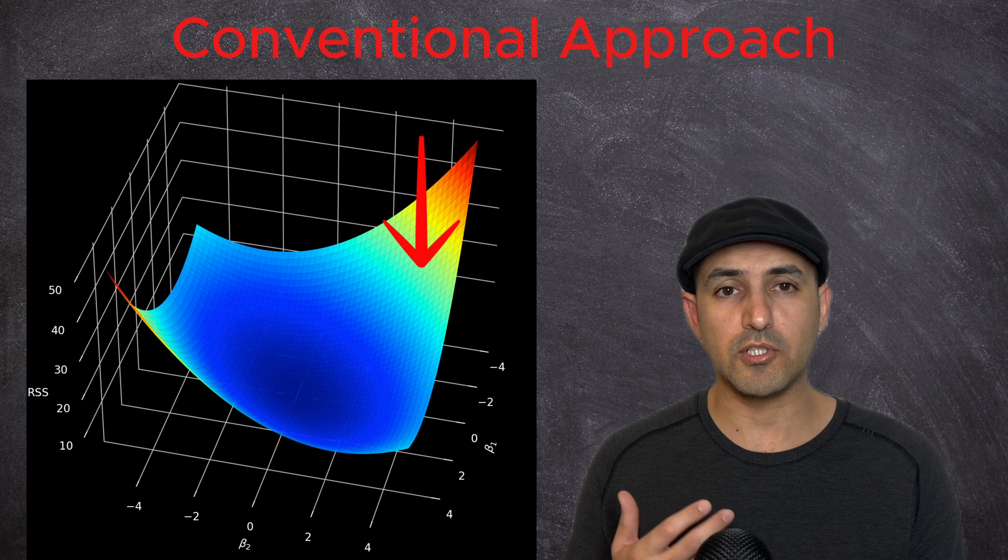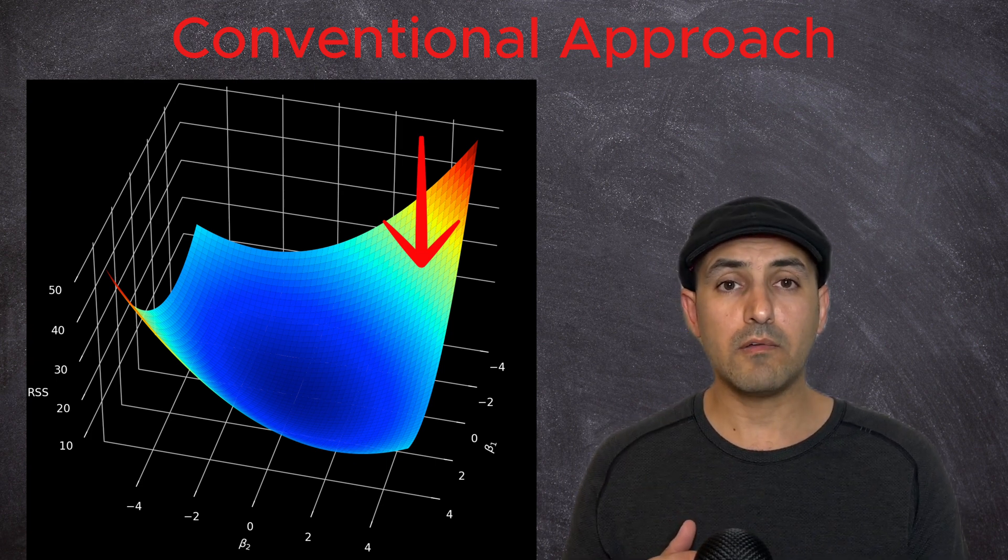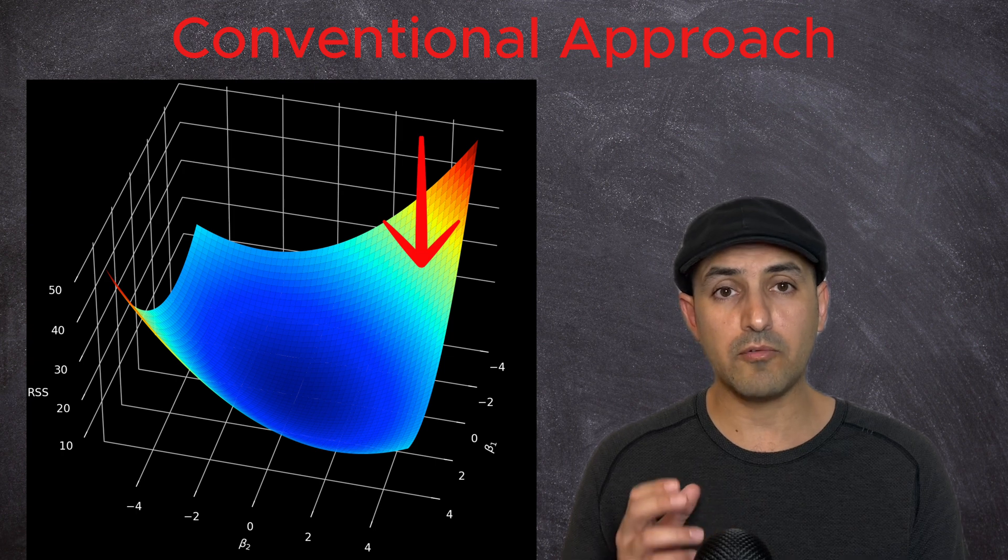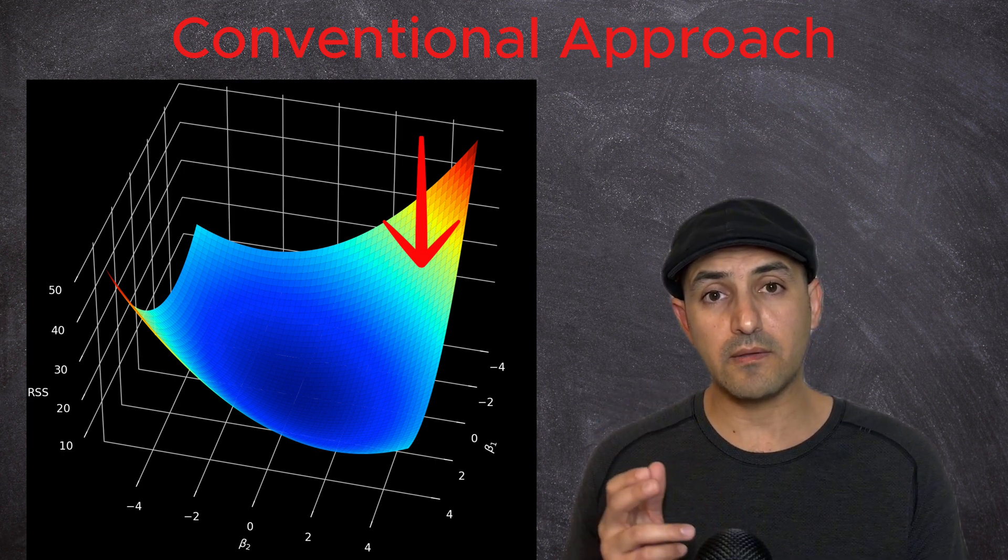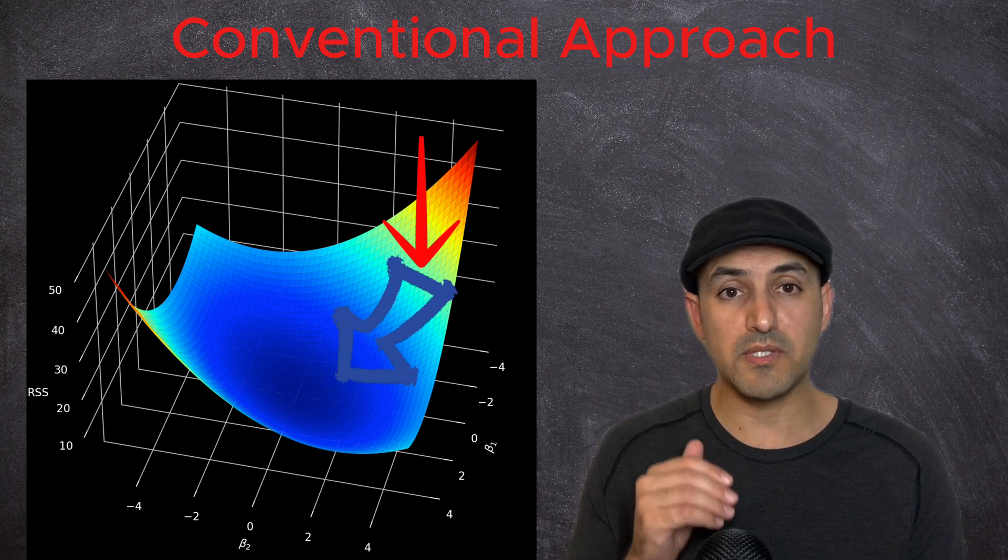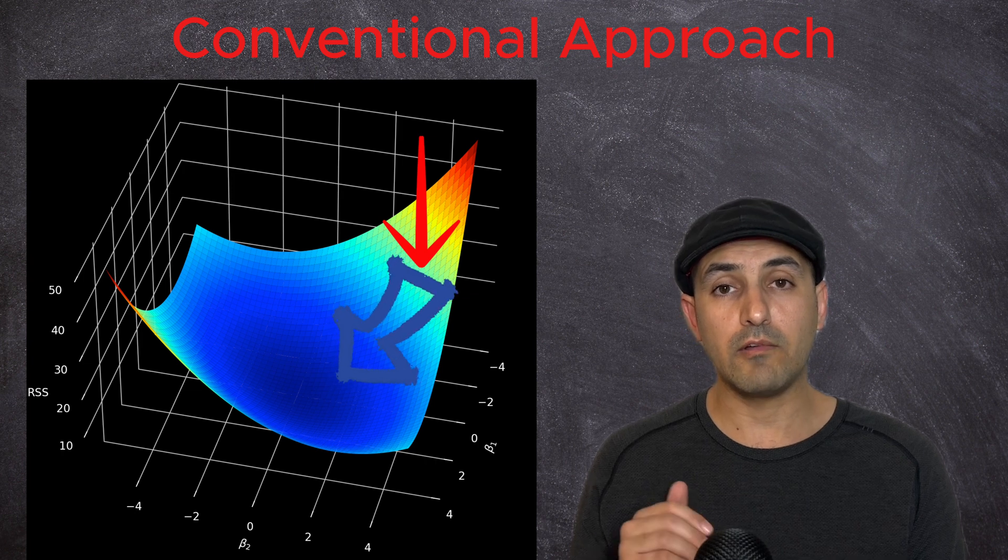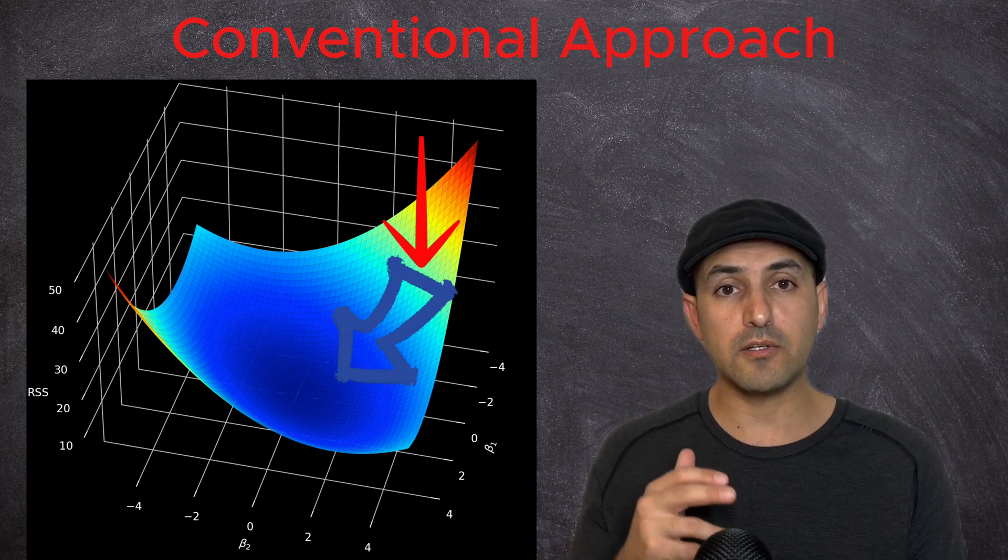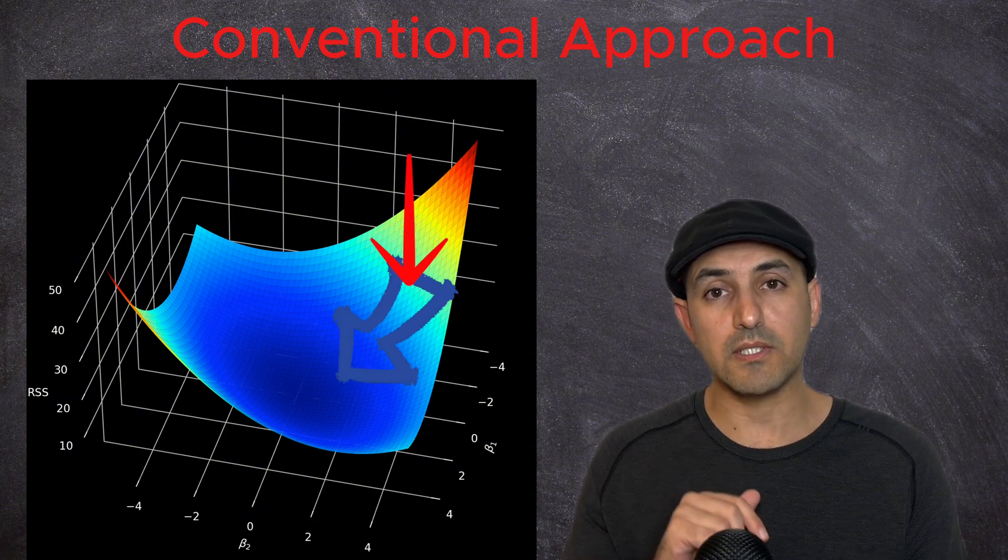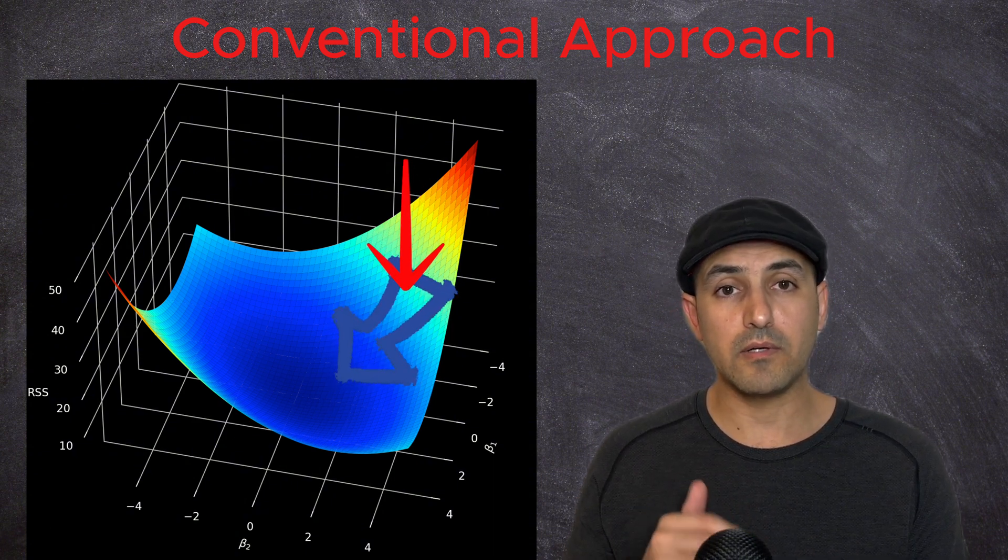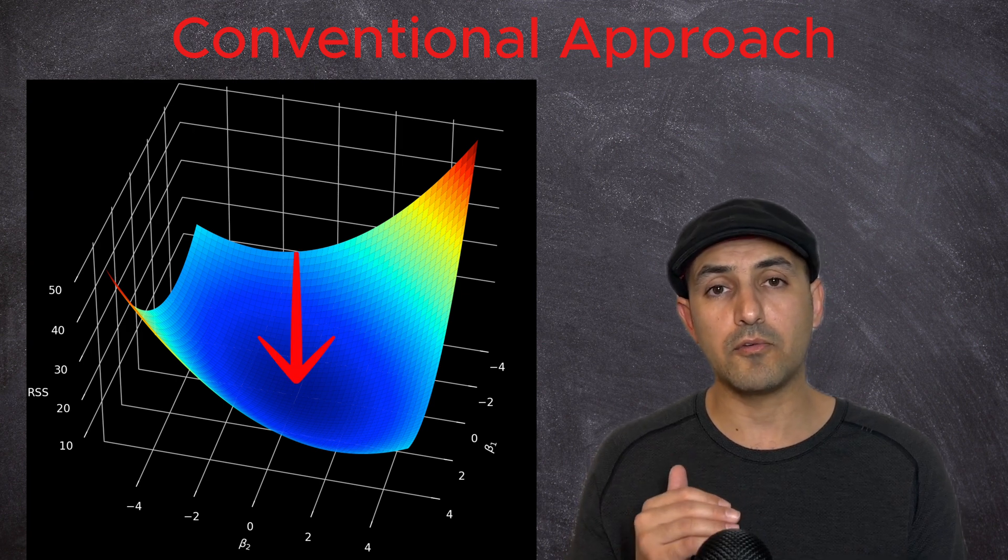To avoid all these computations, I will start with an initial guess for the parameters. And that is usually just a random location on this surface. I will then compute the slope of all the points around my initial guess and find out that this direction, for example, has the steepest decrease in the value of the error function. I will then update my initial guess of the parameters by moving their values in this direction. I will then repeat this process until I achieve no further decrease in the error function.